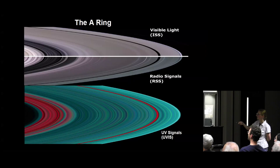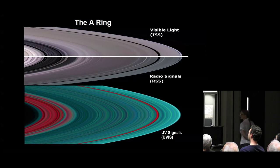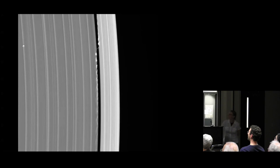We see different structures for different sizes, showing that there is size segregation at different locations in the rings as well.